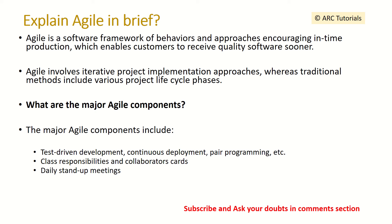What are the major agile components? Some of the major agile components are: it's a test-driven development approach, continuous deployments are involved, pair programming is involved, there is close collaboration between product, business, and development teams, and there are daily stand-ups and other ceremonies like retrospectives and sprint planning. When discussing this, also mention that you are working on a project which implements the agile framework.